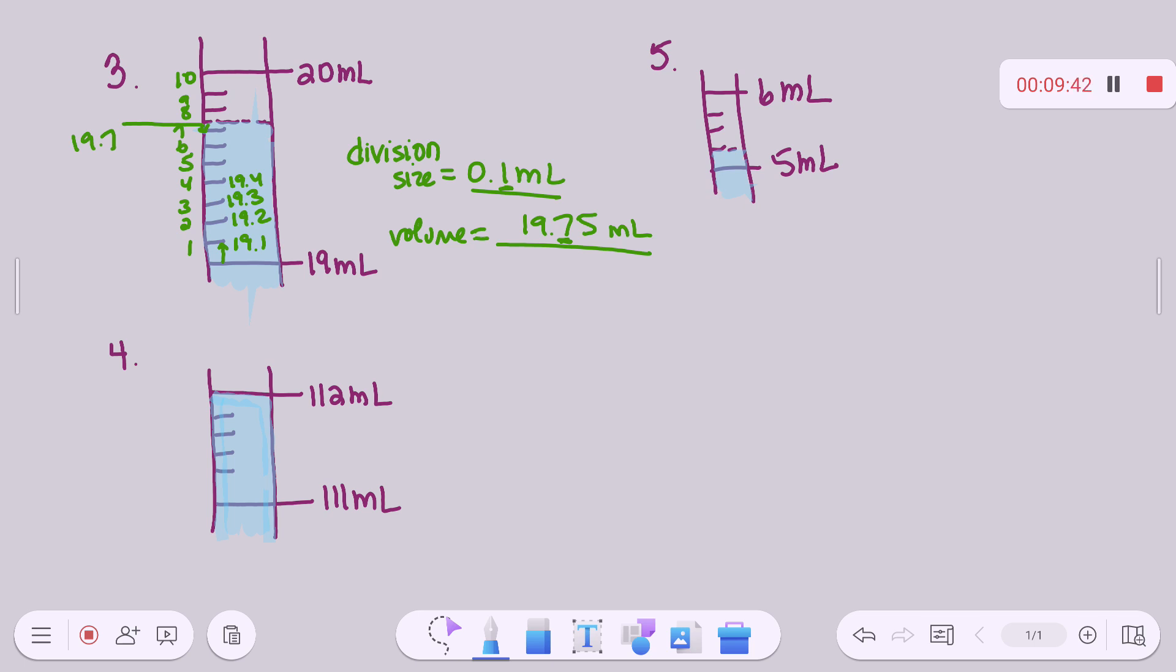And then for number four, you've got one, two, three, four, five divisions. So between here and here, this is how many milliliters. Yeah. So this is 111.2, 111.4, 111.6, 111.8, and then finally 112. So your division size is 0.2. So you are certain to the tenths place. So your volume here would be 112.0. You're not done. You are certain to the tenths place because the division size went to the tenths place. What would you put after that? A zero because you're on the division.